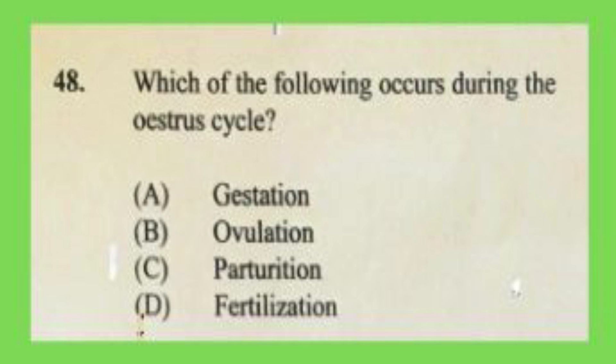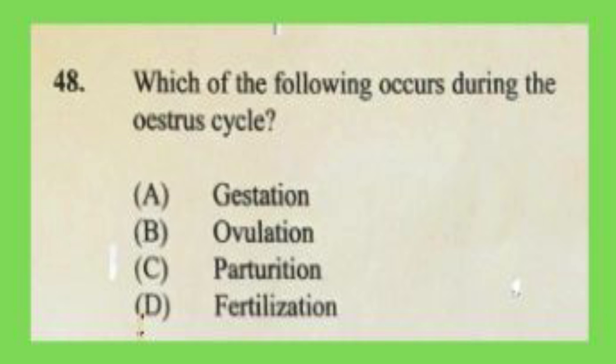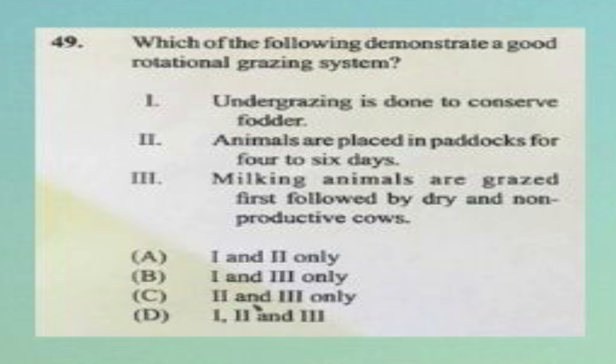Question number forty-eight: which of the following occurs during the oestrus cycle? A) gestation, B) ovulation, C) parturition, D) fertilization. The answer is B, ovulation — the release of an egg from the ovary. When animals come into heat they are ready to accept the male, so the body releases an egg that needs to be fertilized.